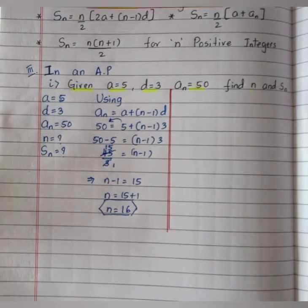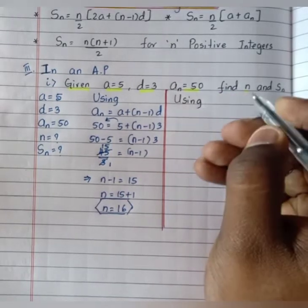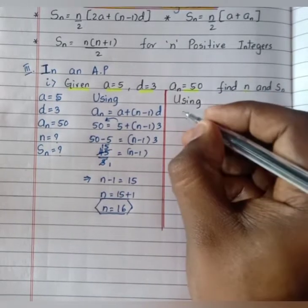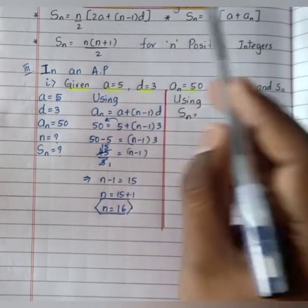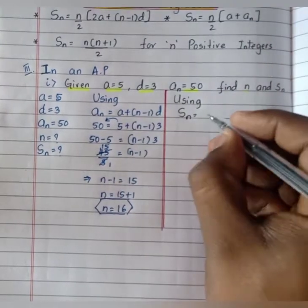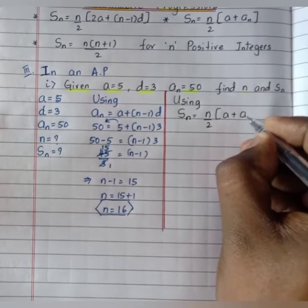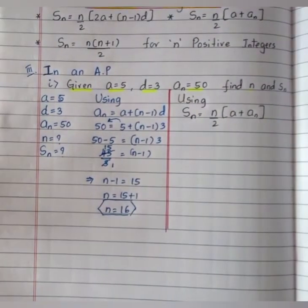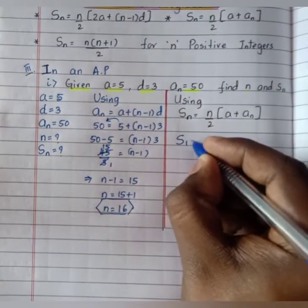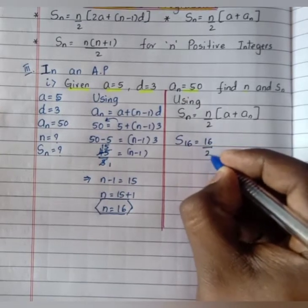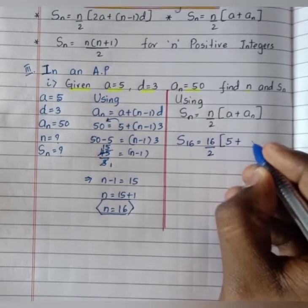Now by using the formula Sn equals n divided by 2 into a plus an — this is simpler since we have the value of the last term an. Therefore Sn equals n divided by 2 into a plus an. Substituting: S16 equals 16 divided by 2 into 5 plus 50.